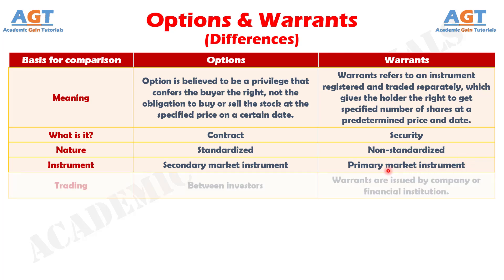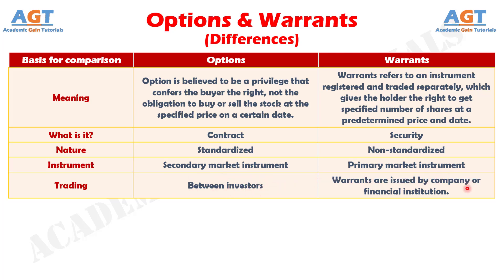Number 5: in the case of a stock option, the trading is performed between investors. But stock warrants are issued by the company or financial institution.